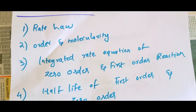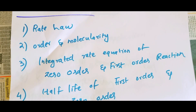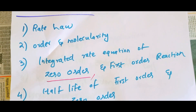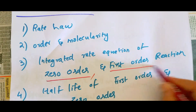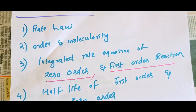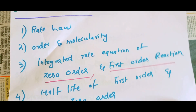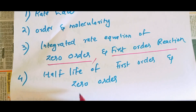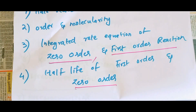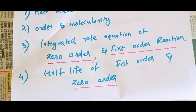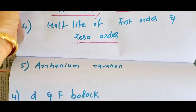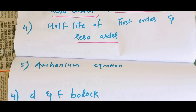What is chemical kinetics? What is the rate? The order and molecularity are different. Integrated rate equation of zero-order reaction, integrated rate equation of first-order reaction — derivation. What is the half-life? Half-life of first-order reaction and half-life of zero-order reaction.